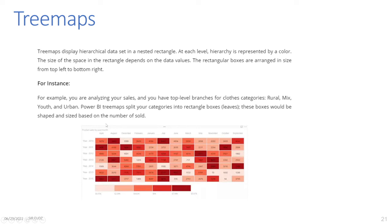Treemap: Treemaps display a hierarchical data set in nested rectangles. At each level, the hierarchy is represented by a color, and the size of each rectangle depends on the data values. The rectangular boxes are arranged in size from top-left to bottom-right. For example, when analyzing sales, you can have top-level branches such as rural, youth, and urban — and the leaves are shaped and sized based on the number of items sold.